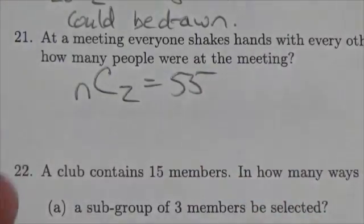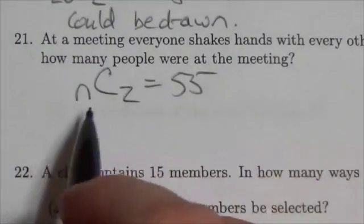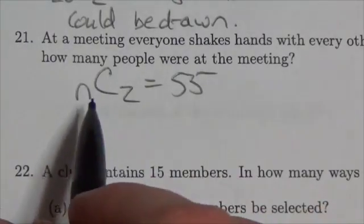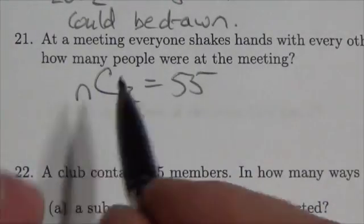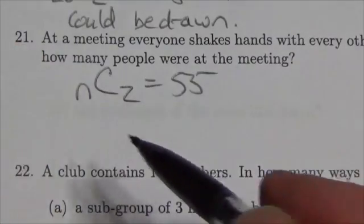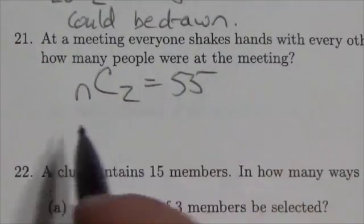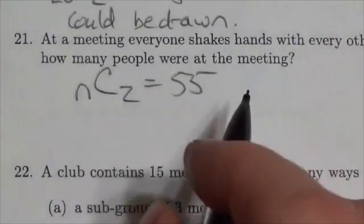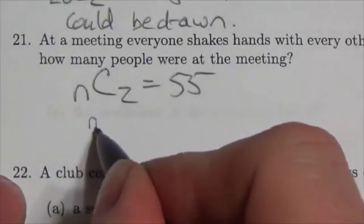But because it's n choose 2, this is actually going to simplify down to a quadratic fairly quickly. If this is n choose 3, it would reduce down to a cubic; n choose 4 to a quartic. So the expectation here is that if it's n choose 2, you should be able to do this one algebraically pretty quickly.